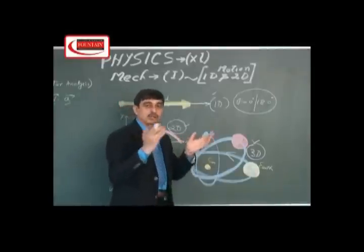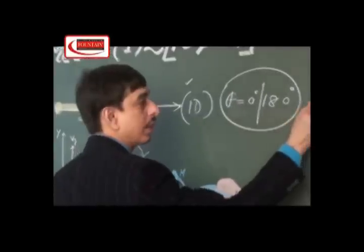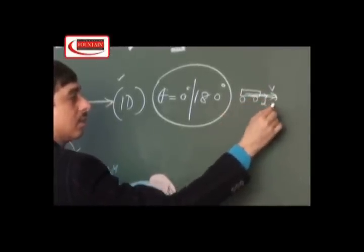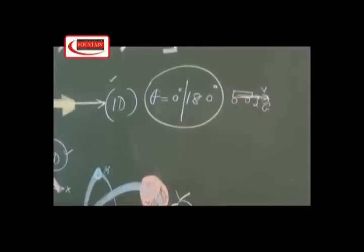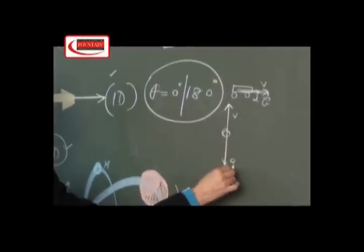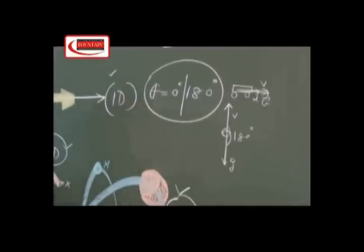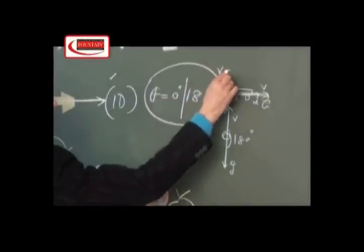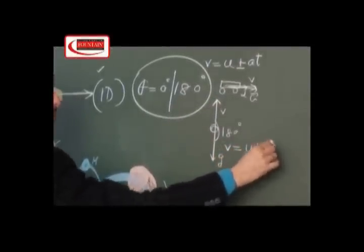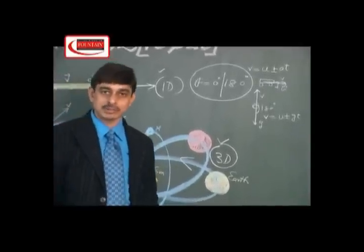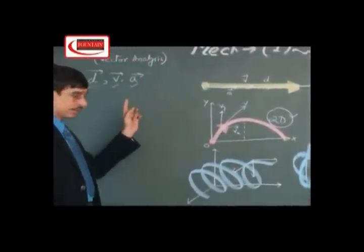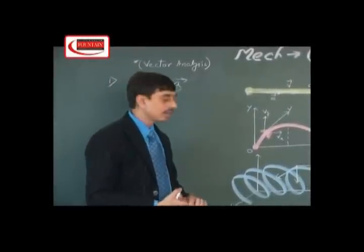Since you are preparing for IIT: a car in motion on a plane road — its directional velocity, directional displacement, and directional acceleration make an angle of 0 degrees. When you throw an object upward, the directional velocity and directional acceleration due to gravity make an angle of 180 degrees. That is why you use the equation v = u ± at, or in this case v = u ± gt, where g is the acceleration due to gravity. After considering these three vectors — displacement, velocity, and acceleration — we understand two-dimensional motion.